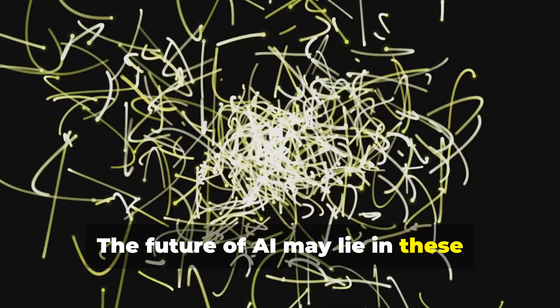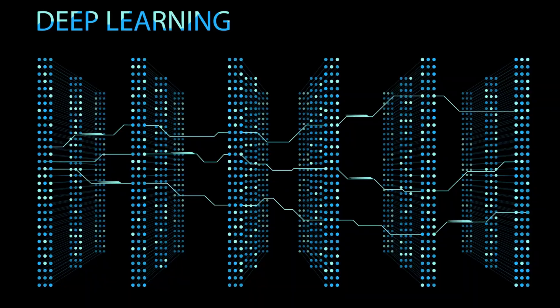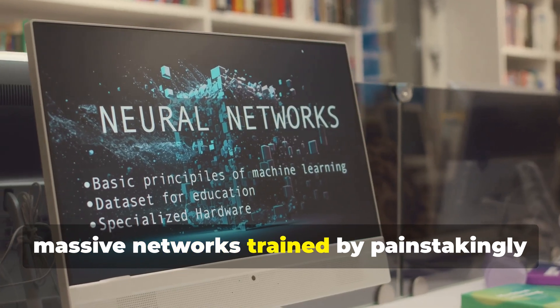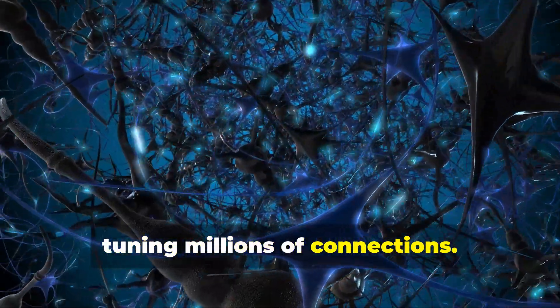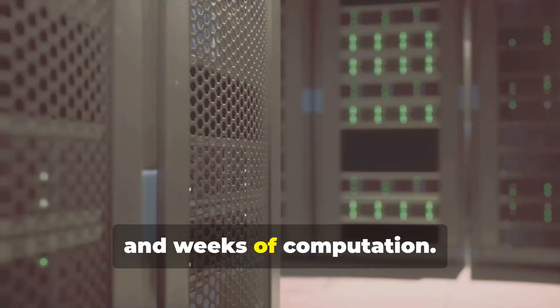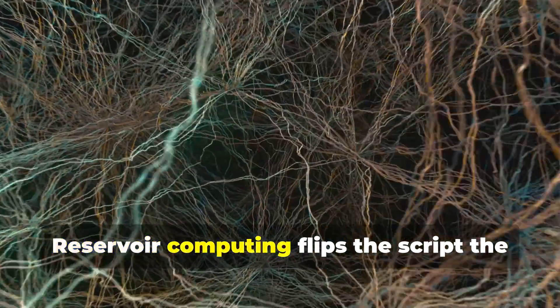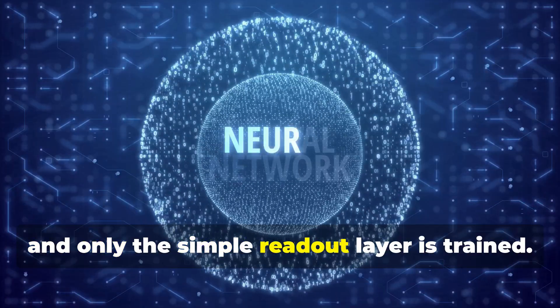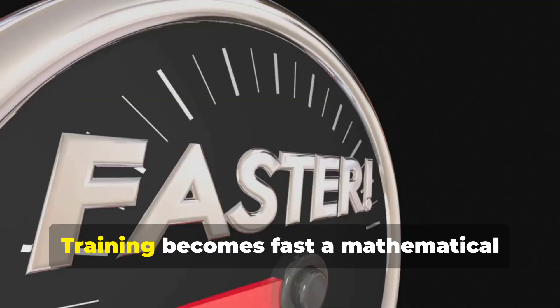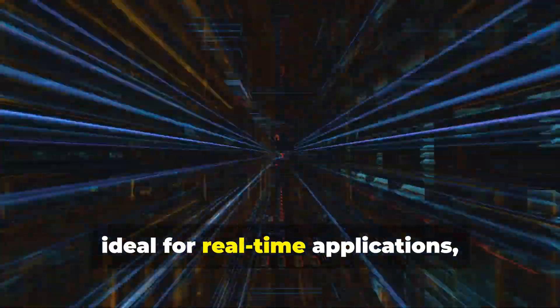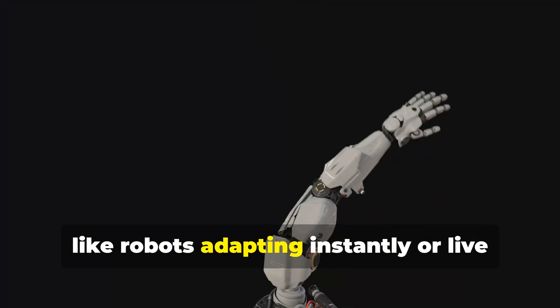In AI, deep learning is the reigning champion—massive networks trained by painstakingly tuning millions of connections. This process demands huge datasets, immense power, and weeks of computation. Reservoir computing flips the script: the complex reservoir is fixed, and only the simple readout layer is trained. Training becomes fast, a mathematical problem solved in seconds or minutes.